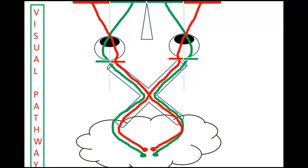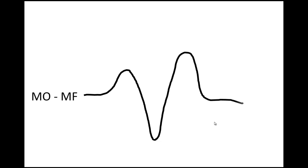When you stimulate the retina and record from the occipital cortex, you record a waveform called P100. On stimulation of the retina, you get a triphasic morphology. The first upward deflection occurs at approximately 75 ms and since it is a negative deflection, it is called N75. The second deflection is a positive deflection at 100 ms, called P100. The third deflection is a negative deflection at approximately 145 ms. These are approximate times, not absolute times.